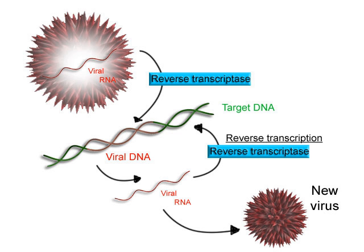If the cell has a nucleus, the RNA may be further processed. This may include polyadenylation, capping, and splicing. The RNA may remain in the nucleus or exit to the cytoplasm through the nuclear pore complex.